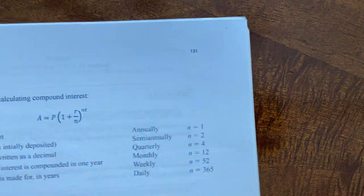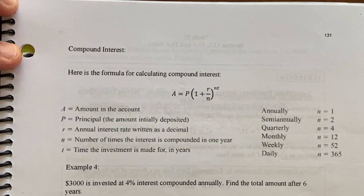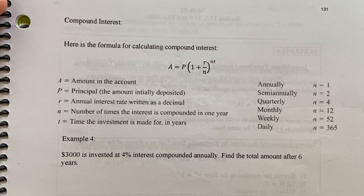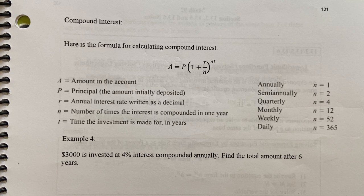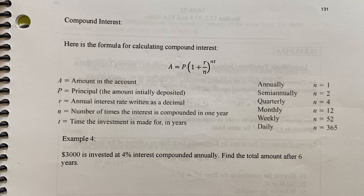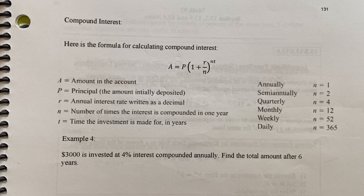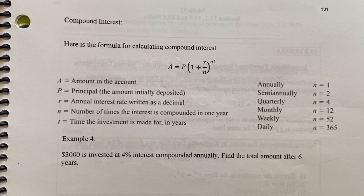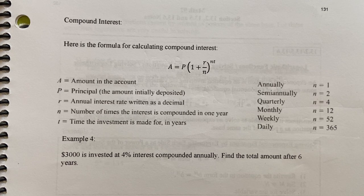Alright. Compound interest. This will be the last part of this video today. So just like fruit flies or people, populations can grow or decline exponentially. Money can also do this. And that's the hope when you invest money is that your money grows exponentially.